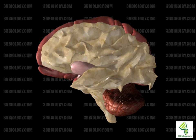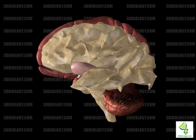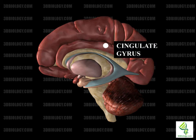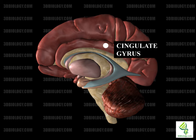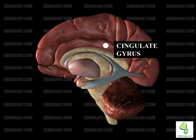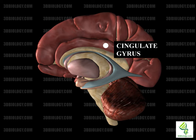The cingulate cortex includes the whole cingulate gyrus and can be found immediately above the corpus callosum in the cerebral hemispheres. It is part of the limbic system. It functions in respiratory control, executive function, as well as learning, memory, and emotions.